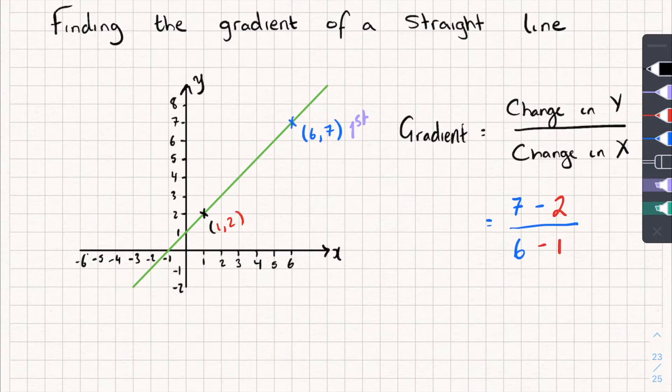If I then work out this gradient, I've got 7 subtract 2, which is 5, divided by 6 subtract 1, which is 5, and 5 over 5 is the same as 1, so the gradient of this line is 1. Nice and easy.